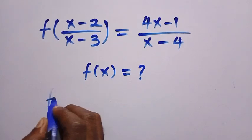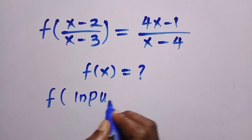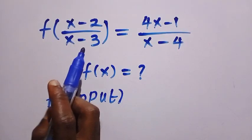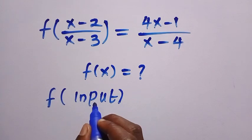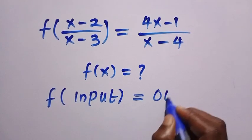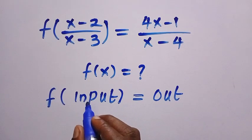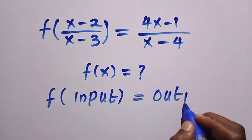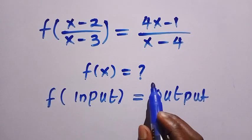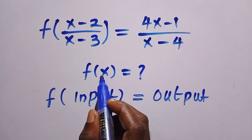We have f of input. The input here is x minus 2 over x minus 3, which is known as the domain, equals the output. The input gives the output, which is 4x minus 1 over x minus 4. We want to find the output of f of x.